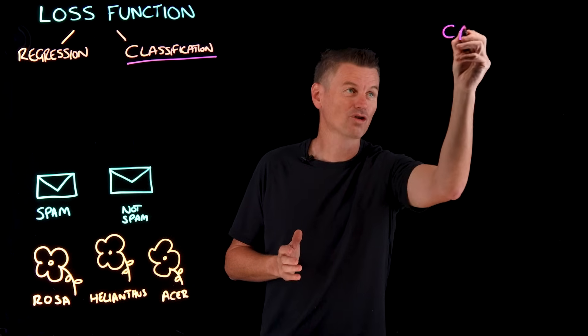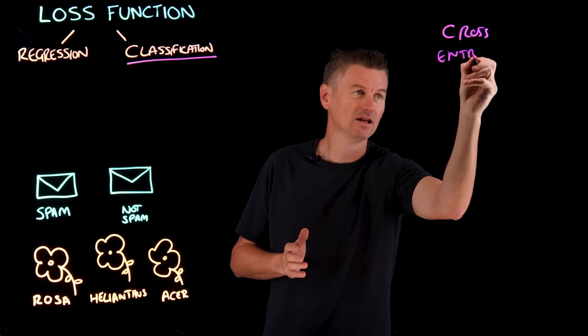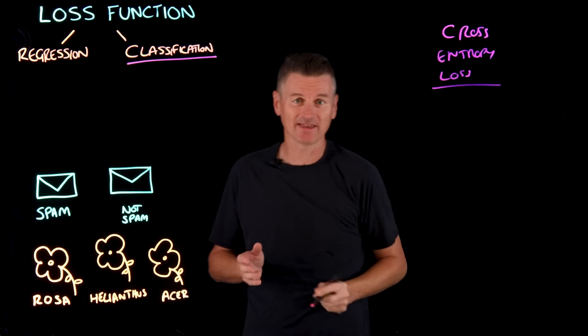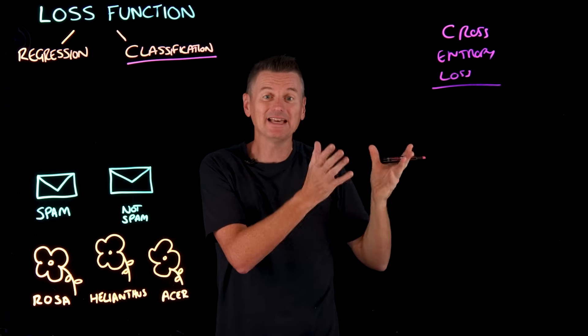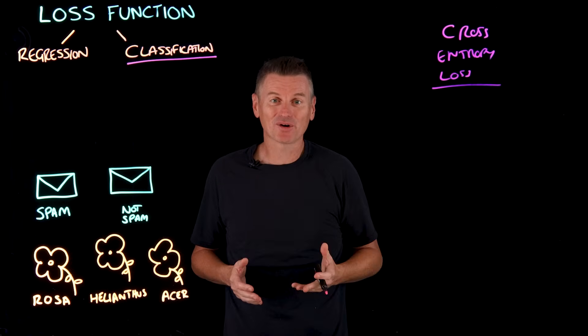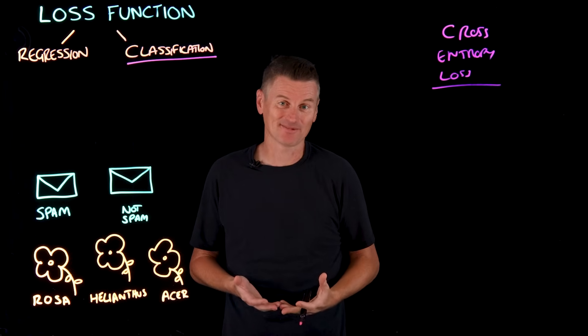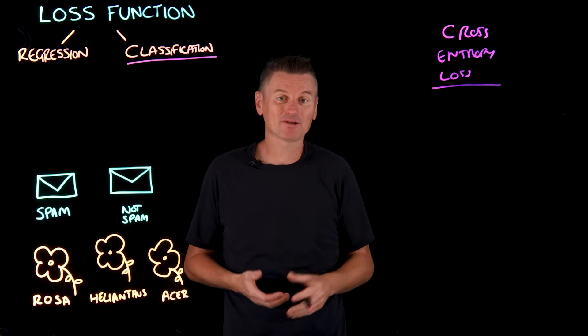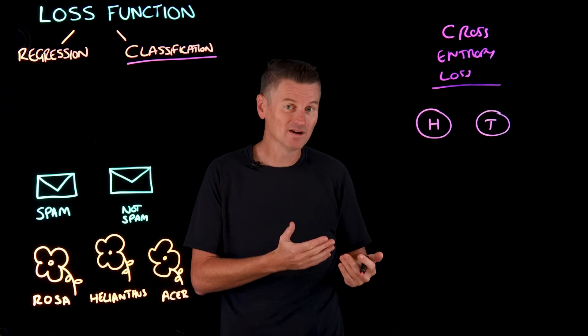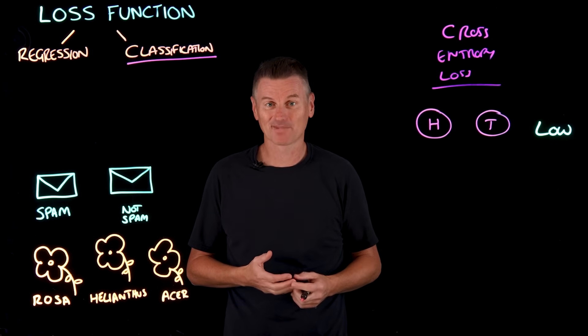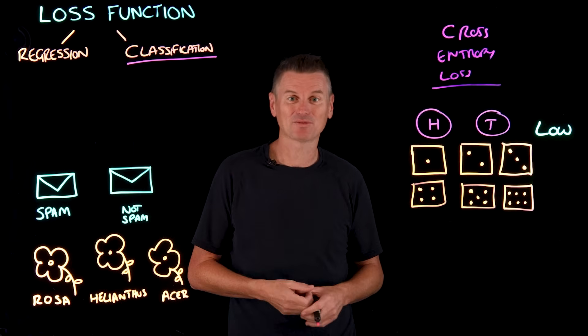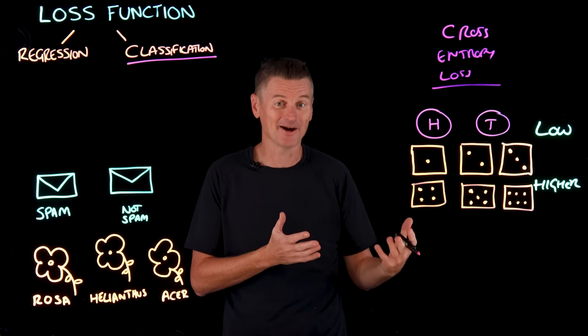Cross entropy loss is one way of doing this, and it's the most widely used loss function for classification tasks. What's entropy? It's a measure of uncertainty within the system. If you're flipping a coin, there are only two possible outcomes, heads or tails. The uncertainty is pretty low, so low entropy. Rolling a six-sided die means there's more uncertainty about which of these six possible numbers will come up. The entropy is higher.